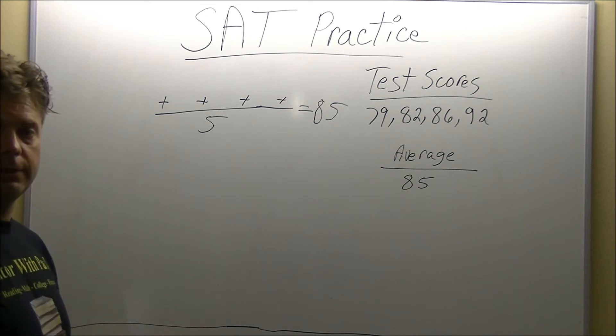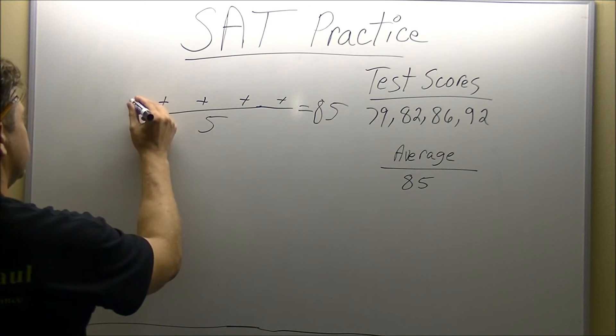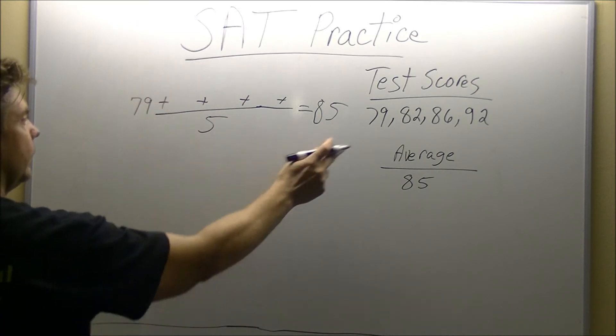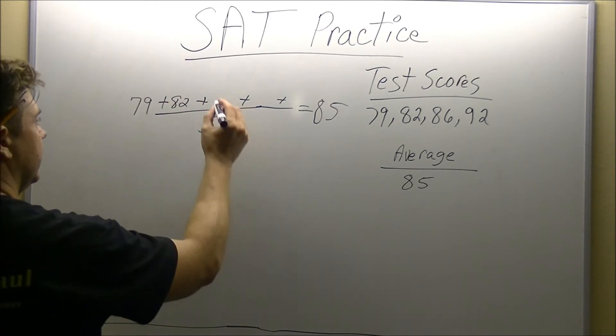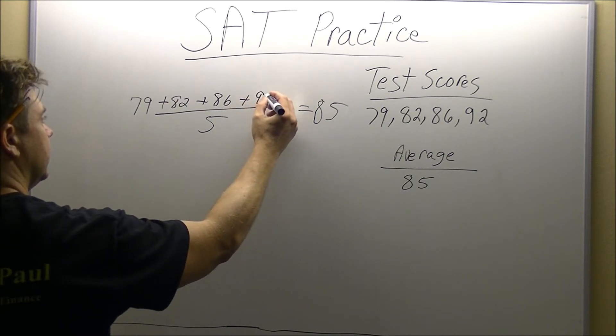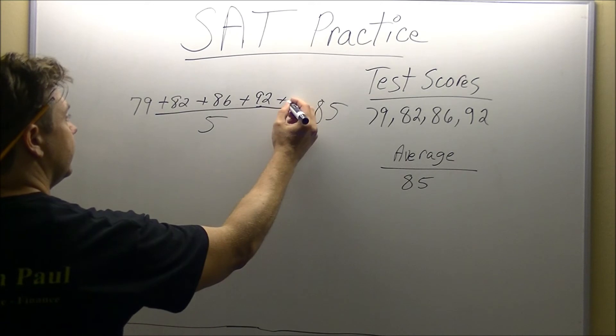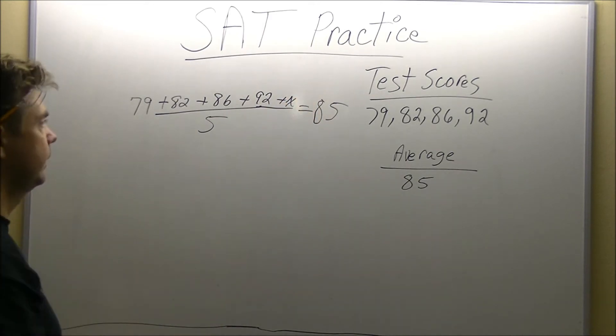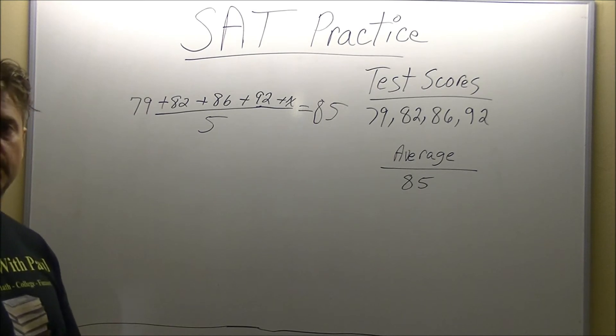Now the only thing we need to do is start plugging in our numbers. We have a 79. We have an 82. We have an 86. And we have a 92. And for the fifth score that we do not know, we are going to use an X. So this is step one. We set up our structure, and then we plug in the numbers.